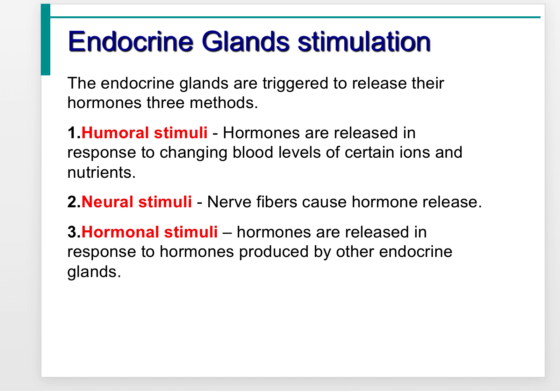Neural stimuli occur when a nerve fiber causes a hormone to release — seen in the case of the pituitary gland, which is controlled by the hypothalamus. Hormonal stimuli occur when a hormone is released in response to other hormones produced by other endocrine glands. For example, the hypothalamus produces hormones that affect other endocrine glands, such as releasing thyroid-releasing hormone to stimulate the thyroid to produce thyroid hormone.